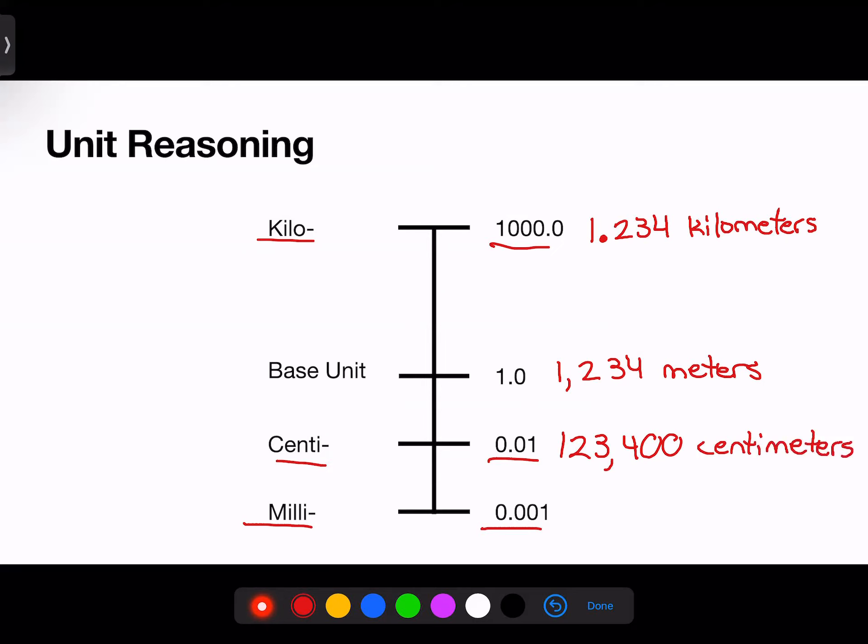And finally, to convert our base unit to millimeters, we divide by 1,000th, which will get us 1,234,000 millimeters.